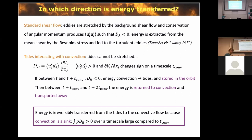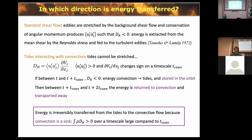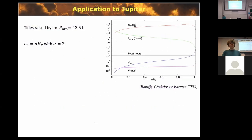Even before proving this rigorously, I can ask: if I assume D_R is positive, what timescales do I get, and do I explain the observations? If not, why bother. This formalism is now applied to Jupiter, looking at the tide raised by Io, which has an orbital period of 42 hours, corresponding to a tidal period of 21 hours.